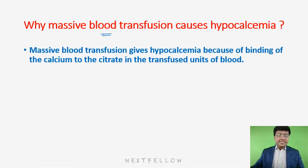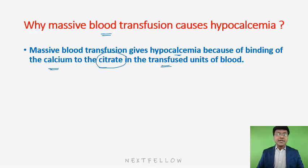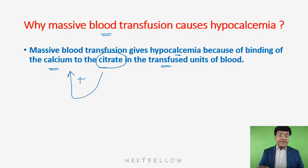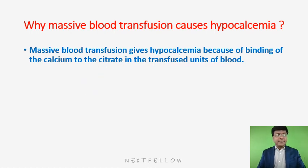Massive blood transfusion causes hypocalcemia because of binding of calcium to citrate present in the transfused units of blood. Citrate is used for storing packed red blood cells, and this citrate binds to calcium, making the individual hypocalcemic.